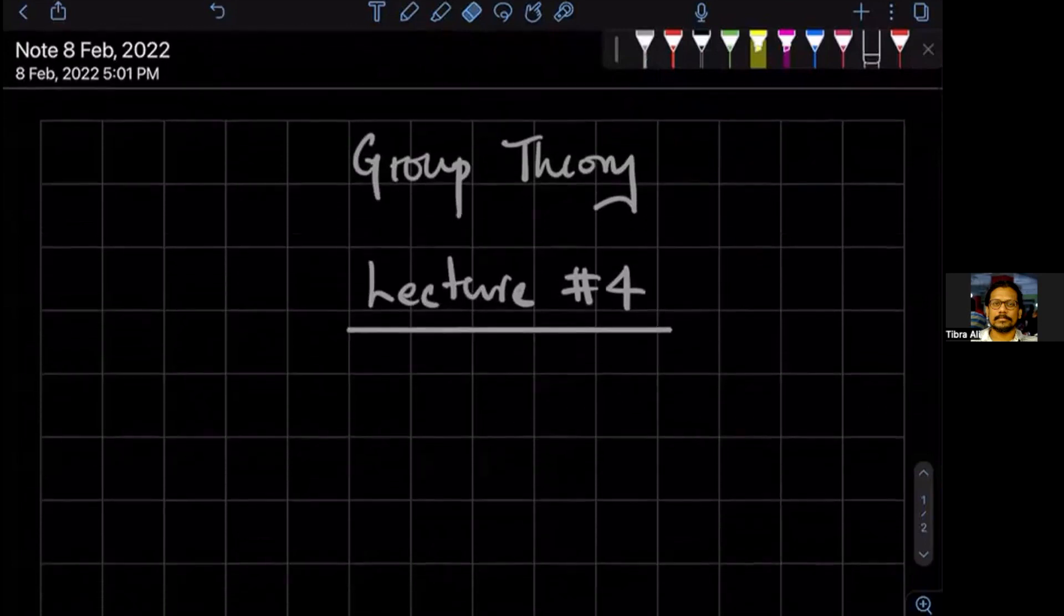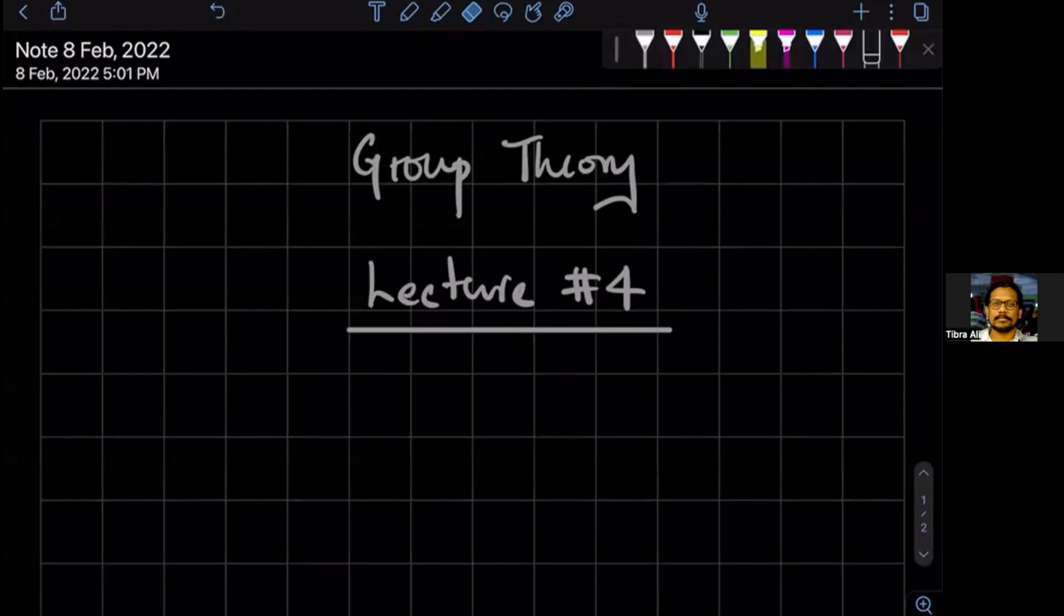So today is the fourth class of group theory. Do you guys have any questions that we can start with first? Can you briefly explain the coset space? Right, sure.